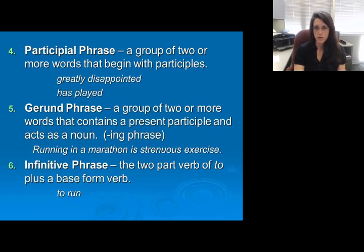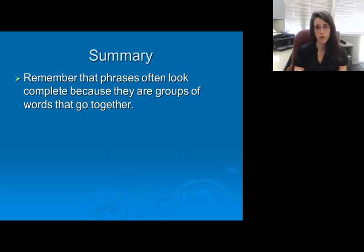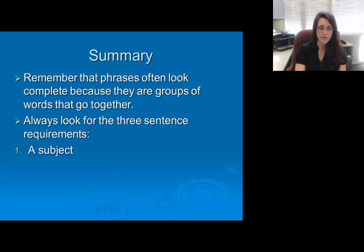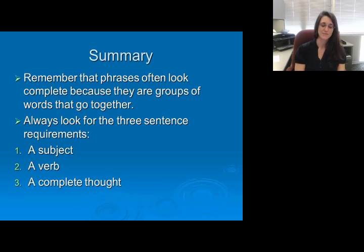Remember that in order to complete a sentence we have to make sure that we have our vital pieces. Phrases often look complete because we know they go together — a group of words like 'across the lake' — and we often believe they're complete because of that. But remember that we have to have the subject, we have to have the verb, and we have to have a complete thought in order to have a complete sentence. Even though those words go together into a phrase, it's not a complete sentence unless we have all three of these required pieces. Thank you very much — hope you enjoyed this lecture today.